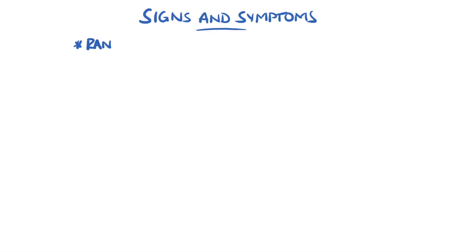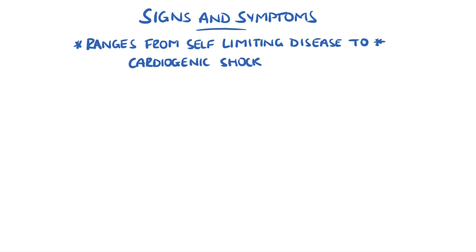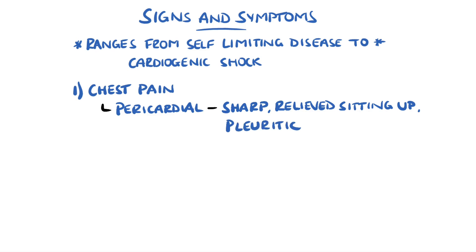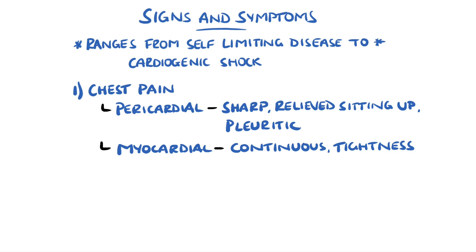Depending on the degree of inflammation and how quickly the pathology has developed, patients can present with a self-limiting disease all the way up to cardiogenic shock. Chest pain is common. In predominantly pericarditis, it is described as a sharp pain that is relieved by sitting forward, which may be pleuritic in nature, meaning it worsens with inspiration or coughing. Myocardial pain can be similar, but is typically more continuous and may feature a sensation of tightness, and it can be similar to acute coronary syndrome pain.